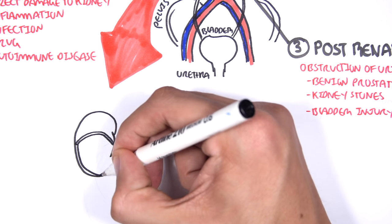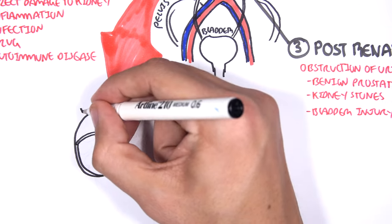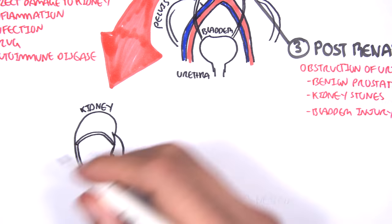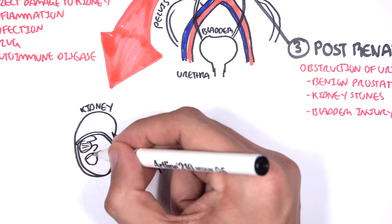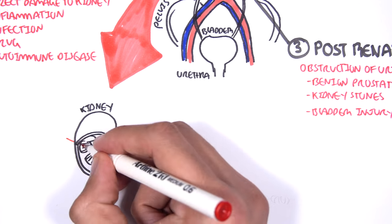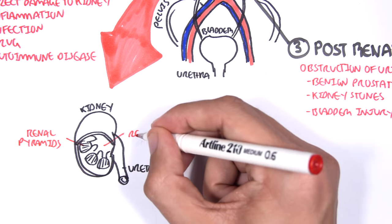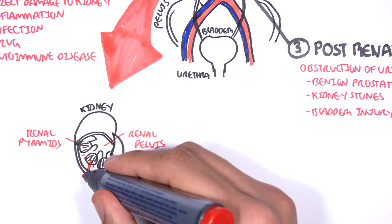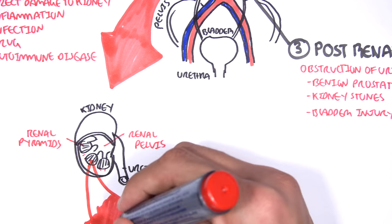Here I'm drawing the right kidney, the ureter, the renal pelvis, the renal pyramids, which are within the renal medulla. And around this area are the functional units of the kidneys, which are called nephrons.